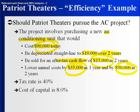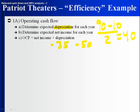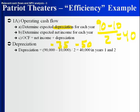Let's take a look at how we want to approach it — it's going to be the exact same approach. First, what is the depreciation in each year? The depreciation would be $90,000 minus $10,000 divided by 2, so it's $40,000 each year. Then we figure out the net income each year. Revenues are going to be zero because there's no information on this affecting revenues. We know costs go down by $35,000 in year one and $50,000 in year two.